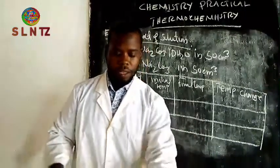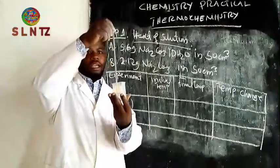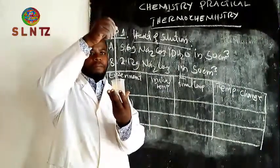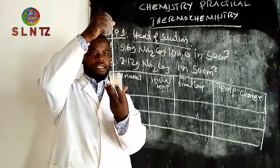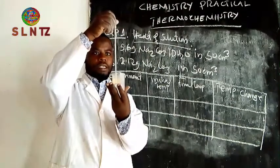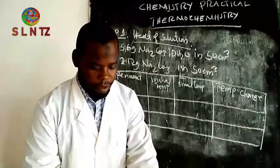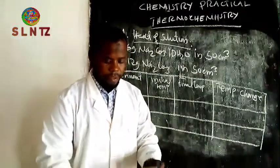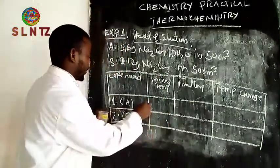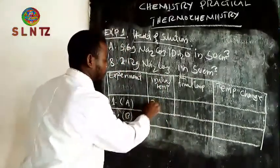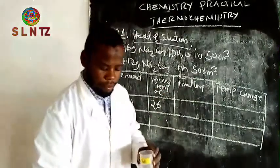So let's start. First we have to record the initial temperature. According to my thermometer, the initial temperature is 26 degrees. That is 26, which is my reading when I am going to dissolve.